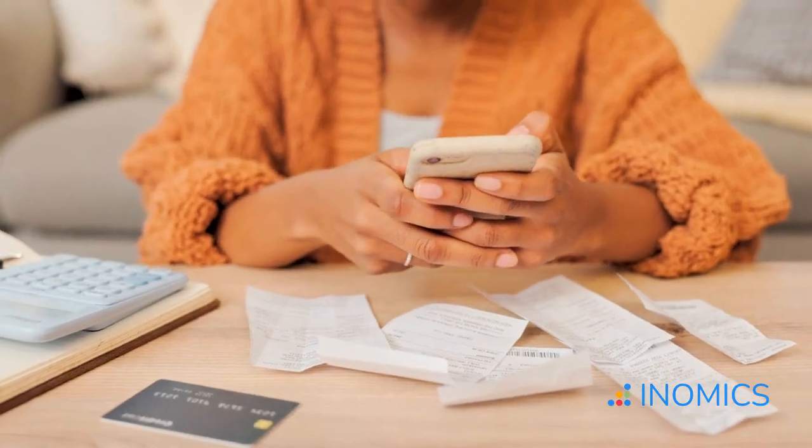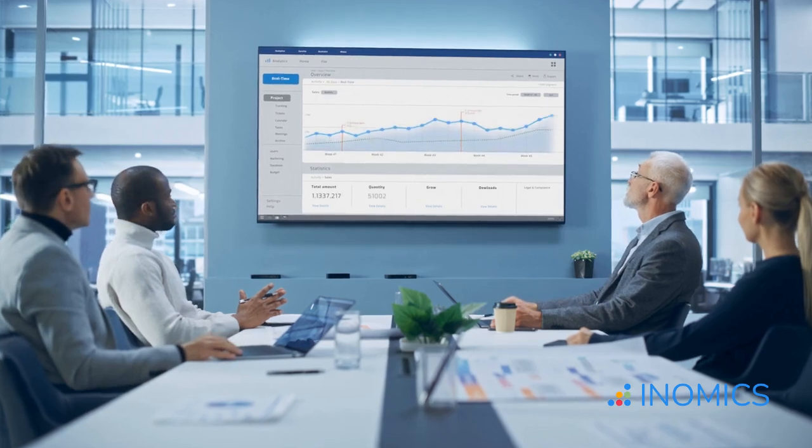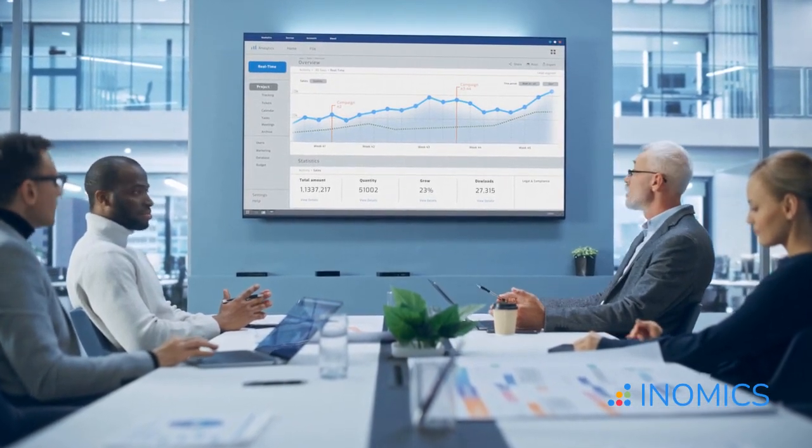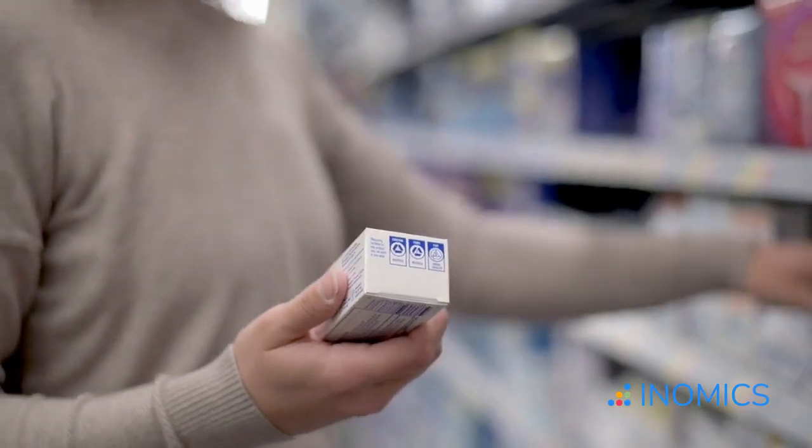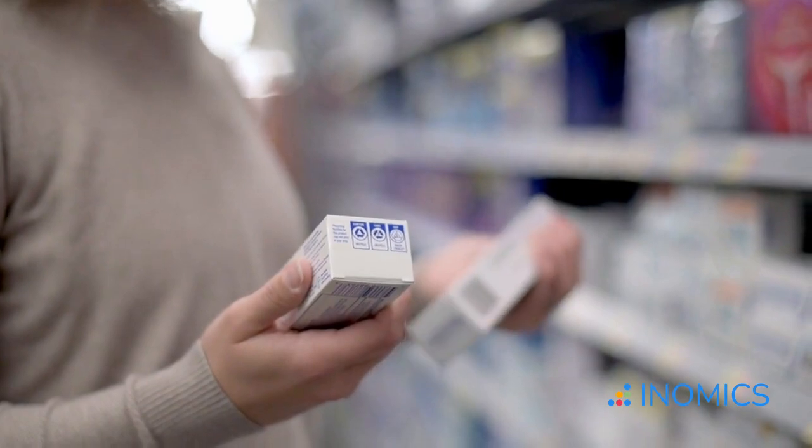A consumer might want to maximize their utility, but they're limited by a budget. A firm might want to maximize revenue, but they're constrained by costs or production capacity. Lagrangian Optimization lets us mathematically figure out the best possible choice for an agent, given their constraints.